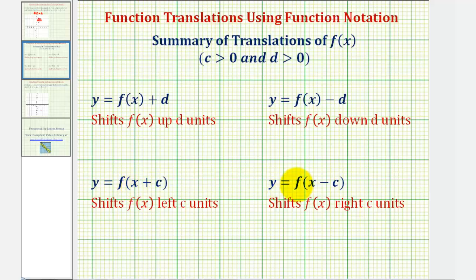And then finally we have y = f(x − c). Notice here we're subtracting c from x, and therefore we have to use larger values of x to produce the same inputs as the basic function f(x). So because we're using larger values of x, it would shift the graph right c units.